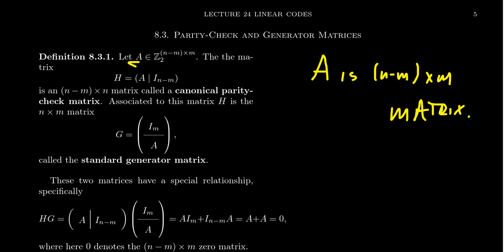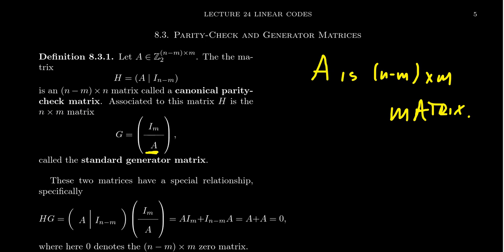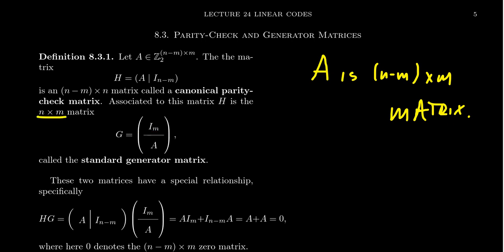If we choose A appropriately, we can have parity check bits inside our code words. Associated to the parity check matrix is what we call the standard generator matrix G. G is an n by m matrix where we place the identity matrix on top and the matrix A on the bottom. The identity has m columns matching A, giving n minus m plus m equals n rows total, so G is n by m.